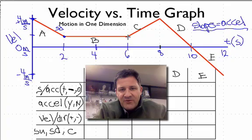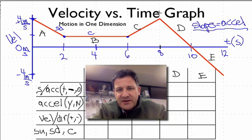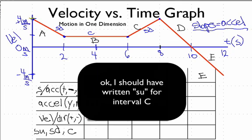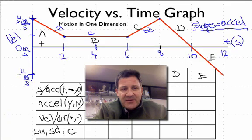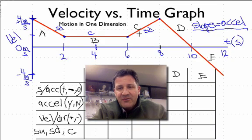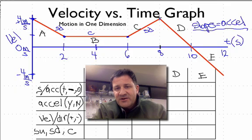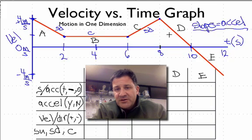In section B, we start at 2 meters per second and end at 2 meters per second, so we're not speeding up or slowing down — that's constant velocity. In section C, we go from 2 to 4 meters per second, meaning we're speeding up. A lot of people are confused because section A slopes downward (negative slope) while C slopes upward (positive slope), but direction is determined by the sign of the velocity. Everything above zero is positive velocity, so all of A, B, and C are in the positive direction.